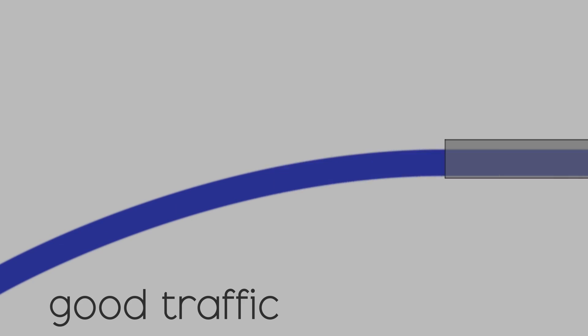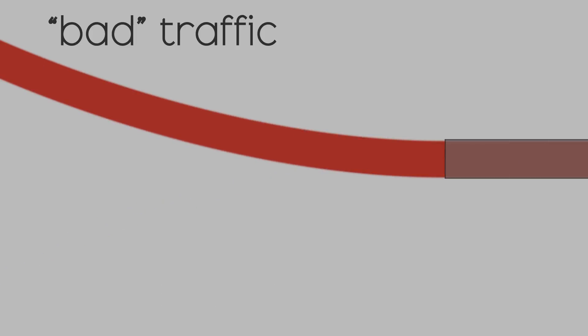A couple of thousand computers go to the same website at the exact same time and they crash it, because the web servers can't cope with that amount of visitors. As a result, no one can use the site until they stop doing that. It's really that simple — flood the lines with useless traffic and normal traffic can't get through.